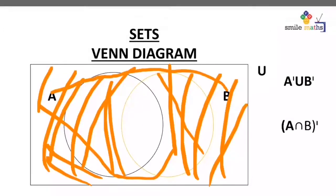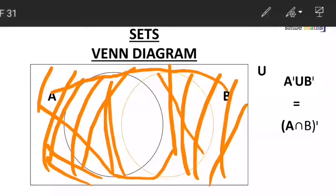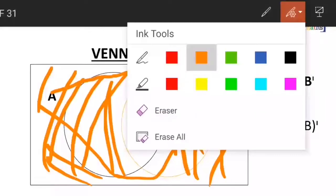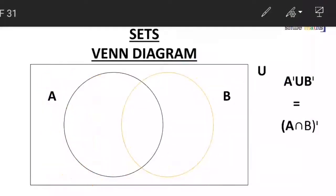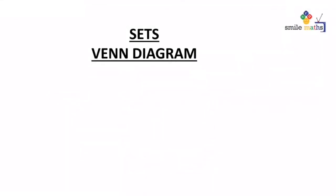So this shows that A complement union B complement is equal to the complement of A intersection B. Now let's move to the last part of the video.